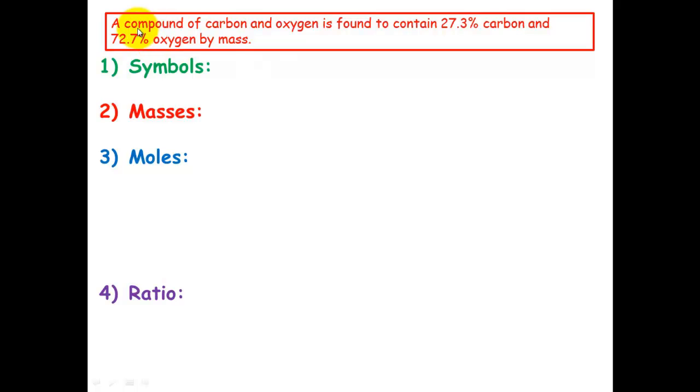So again, here's my question, and we need to follow these steps. So the first two things we've got are write down the symbols. The second thing we want to put masses, they're in percentages. So I'll just change those to grams. So I've got 27.3 grams for carbon and 72.7 grams for oxygen. We need to convert these masses to moles in step 3.